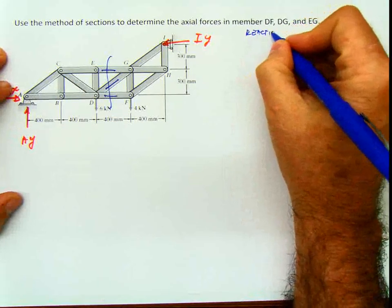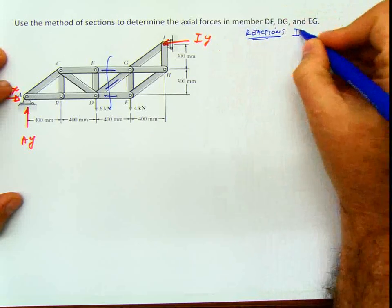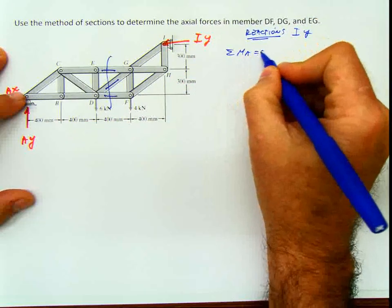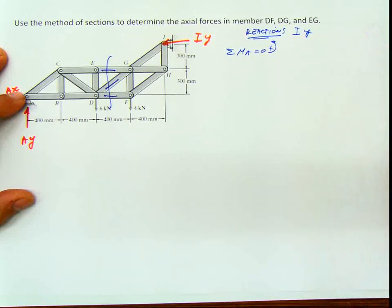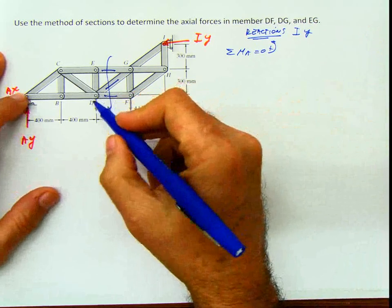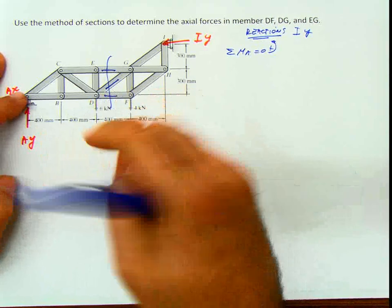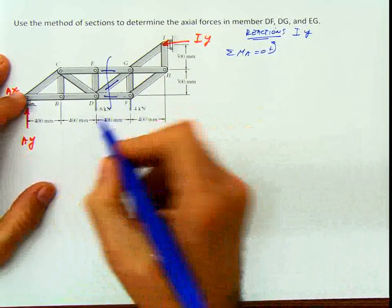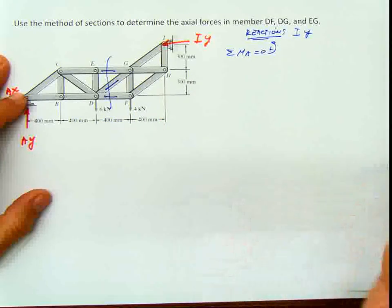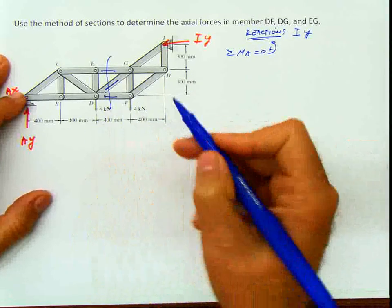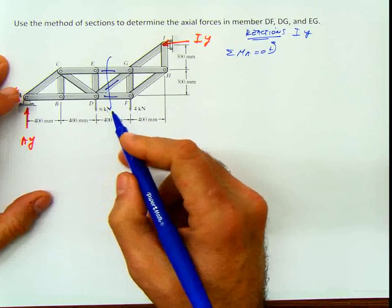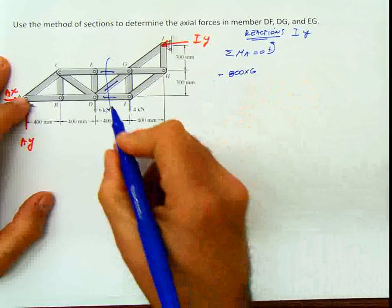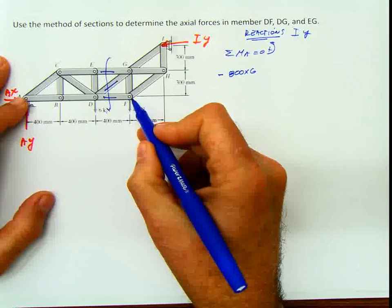By the reactions, I mean Iy. For calculating Iy, I'm going to do summation of moments at A equals 0. If you do that, then we will have 800 millimeters times 6 going in this direction. I'm going to keep it in kilonewton millimeters, but at the end the millimeters will cancel out and the result will be in kilonewtons. So it's going to be 800 times 6, negative. Then I'm going to have 1,200 times 4, negative also.